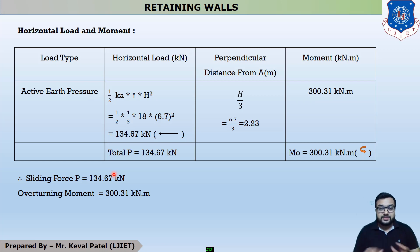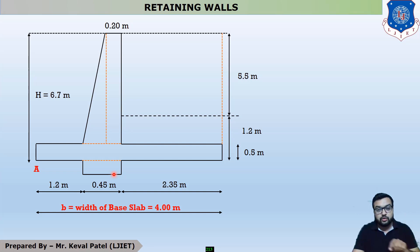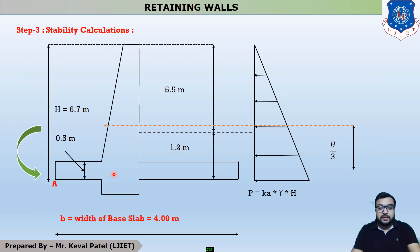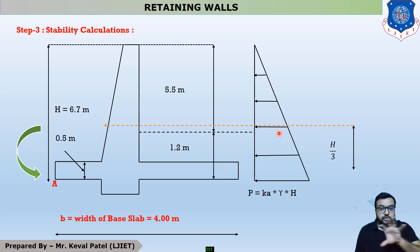The direction of horizontal force generates an anti-clockwise moment. This is because our horizontal force is acting due to backfill, and this force due to backfill is called lateral earth pressure.